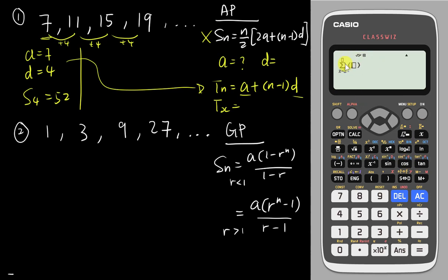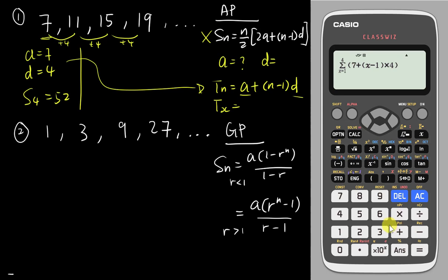The sigma symbol means sum from one x value to another. Inside the brackets you insert your formula: since a is 7, you type 7 plus (x minus 1) times 4. Then to sum from the first term to the fourth term, you set the range from 1 to 4 and press equals. The calculator tells you the answer is 52, confirming the result.